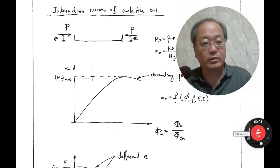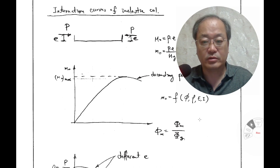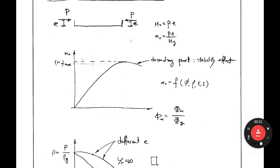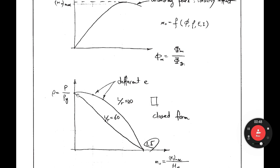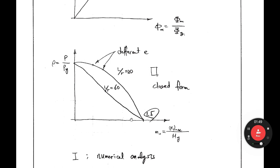Last lecture we derived interaction curves for inelastic beam-columns. We obtained the maximum first-order moment corresponding to normalized curvature. For different E and different L/R values we can get this point, and ultimately draw the curve when L/R equals 60. The vertical axis is normalized axial force and the horizontal axis is normalized first-order moment.